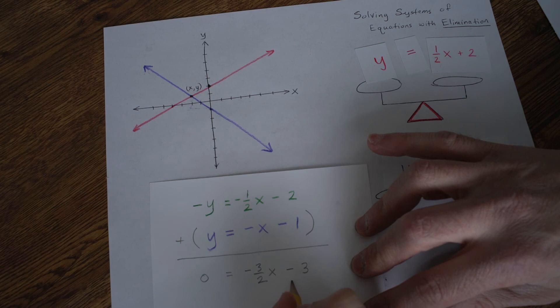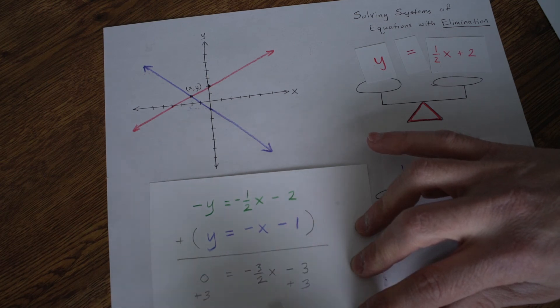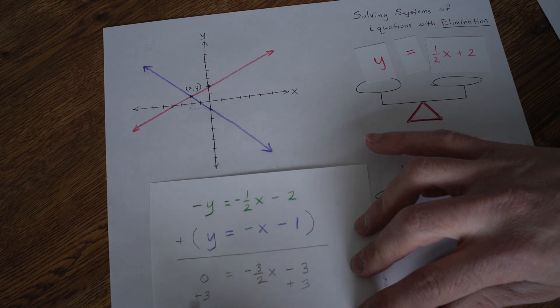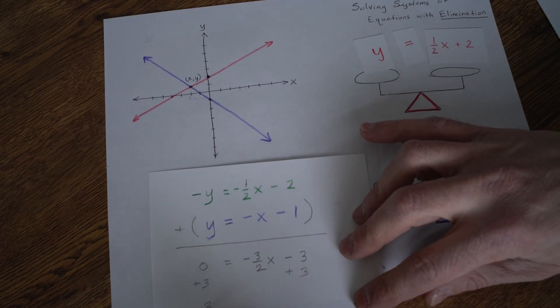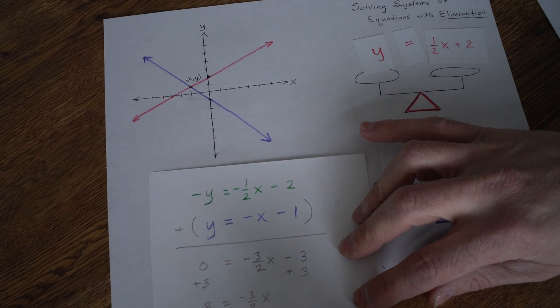Now to solve this algebraically, it might be nice if we add 3 to both sides. And then we have the x terms on one side and the constant terms on the other side. So we have 3 equals negative 3 halves x.